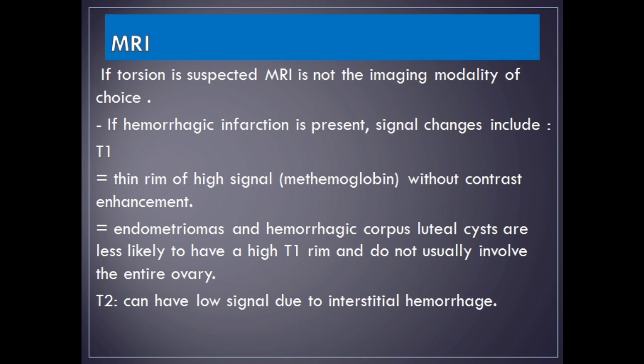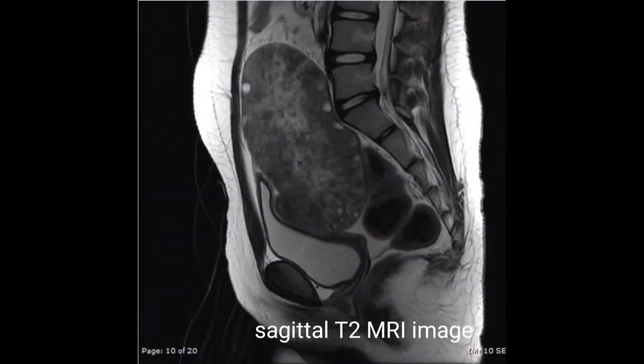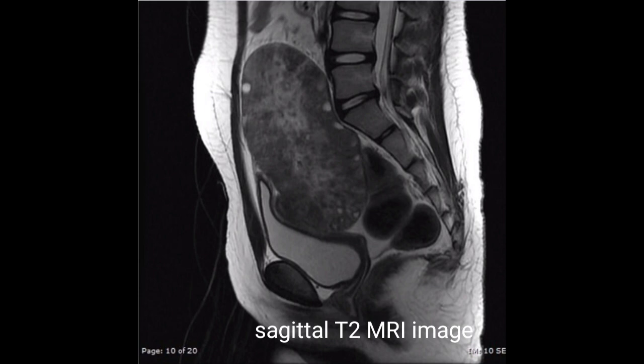MRI. If torsion is suspected, MRI is not the imaging modality of choice. If hemorrhagic infarction is present, signal changes include a T1 thin rim of high signal (methemoglobin) without contrast enhancement. Endometriomas and hemorrhagic corpus luteal cysts are less likely to have a high T1 rim and do not usually involve the entire ovary. On T2, low signal can be seen due to interstitial hemorrhage. A sagittal T2 MRI case demonstrates a very large left ovary measuring 13 by 6.5 cm, pushing the uterus anteriorly and to the right, with hyperintense signal, multiple small follicles, and surrounding mild fluid collection.